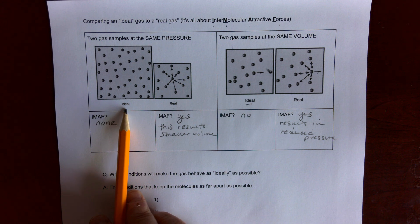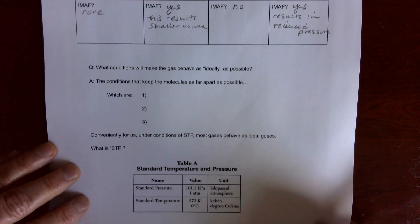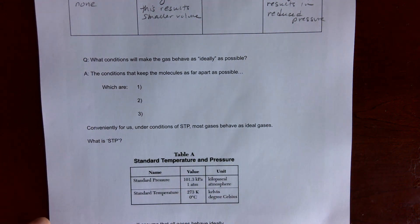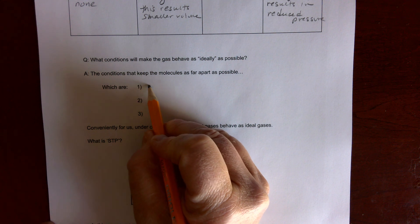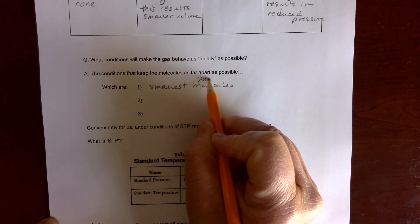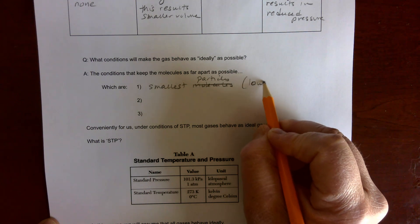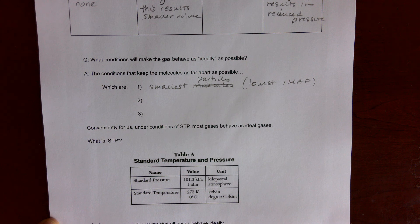For the scope of this course, we will be dealing with gases under ideal conditions. What you need to know is which conditions make a gas behave as ideally as possible — conditions that keep molecules as far apart as possible, minimizing their effect on each other. Using the smallest molecules possible helps; for example, hydrogen and helium are the smallest particles in gas form and have the lowest intermolecular attractive forces because they are very small and don't exert much force on each other.